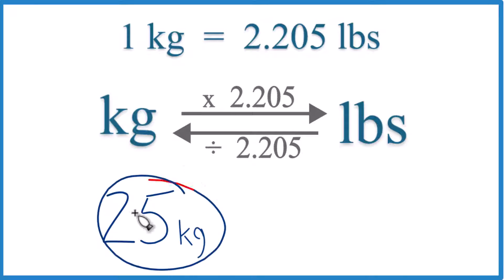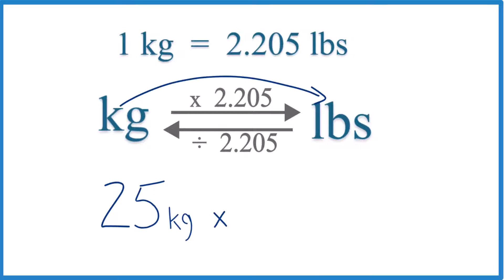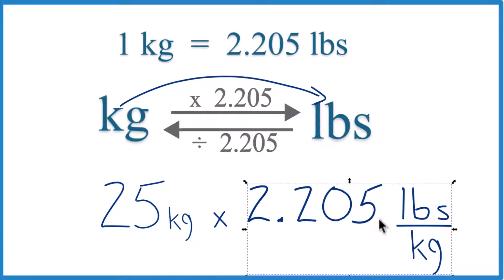In this case, we have 25 kilograms. So we're going from kilograms here to pounds. We're going to multiply by that 2.205 number there. So we take 25 times 2.205, and that's pounds per kilogram. That came right here from our conversion factor.